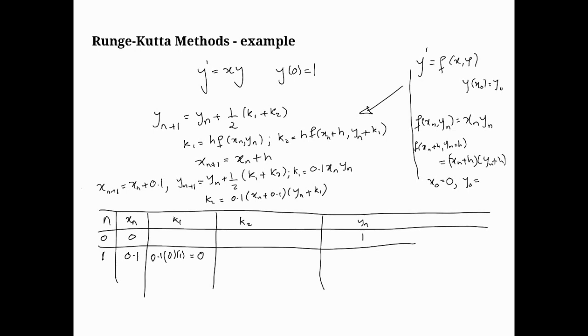K2, on the other hand, it's going to be 0.1, and it's going to be x0, which is 0, plus h, which is 0.1, and it's going to be y0, which is 1, plus k1, which is 0. So that's equal to 0.1 times 0.1, so it's equal to 0.01.